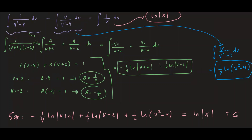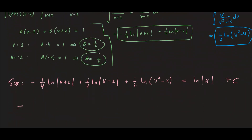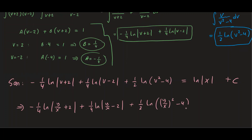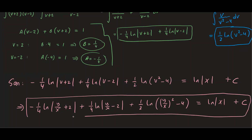Now we substitute back v equals y over x. Our final result is: negative 1/4 ln|y/x plus 2| plus 1/4 ln|y/x minus 2| minus 1/2 ln((y/x) squared minus 4) equals ln|x| plus c. Of course you can simplify further using the laws of logarithms, but we'll stop here. Keep going and simplify using laws of logarithms.